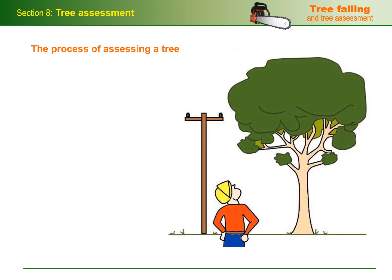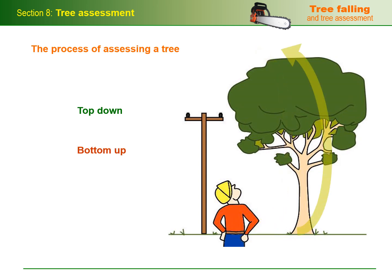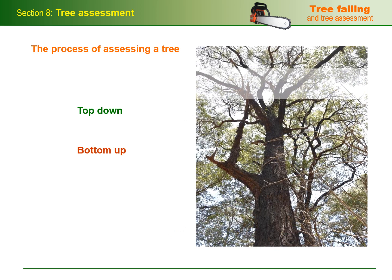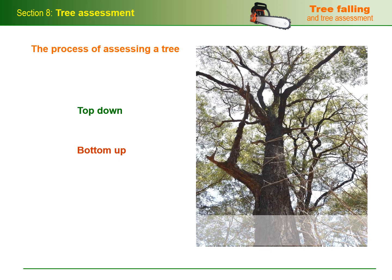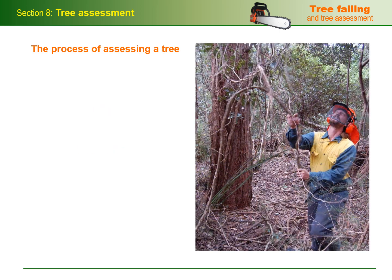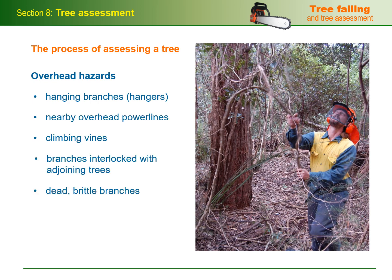We'll start our discussion with the basic process of assessing a tree. Some tree fallers like to inspect a tree from the top down; others like to take a bottom-up approach. It doesn't matter which approach you use as long as you systematically assess the tree and its surrounds, taking into account all of the potentially hazardous features or growth characteristics. For this discussion, let's start at the top and work down. We've already talked about overhead hazards that aren't actually part of the tree in other sections, so we won't go into further detail here, other than to restate some of the main ones.